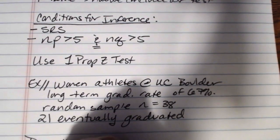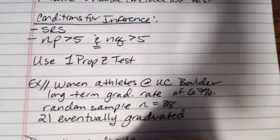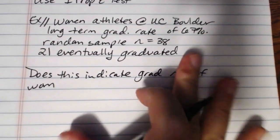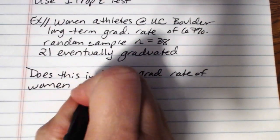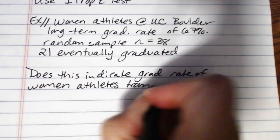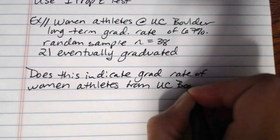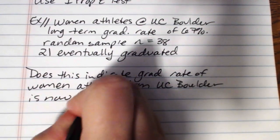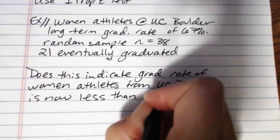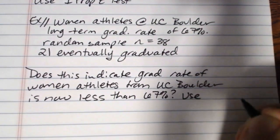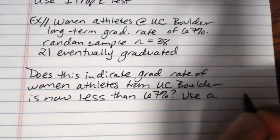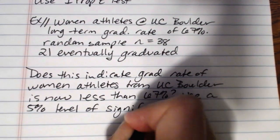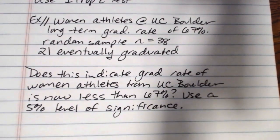Does this indicate that the population proportion of women athletes who graduate from UC Boulder is now less than 67 percent? We want to use a five percent level of significance.